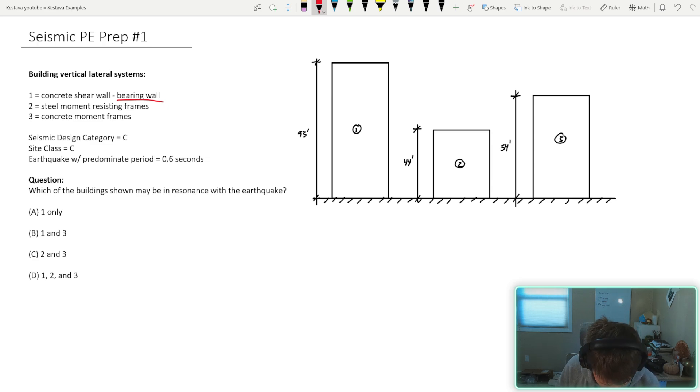Building type two is a steel moment resisting frame, and building type three is concrete moment frames. Some additional site criteria: we are seismic design category C, site class type C, and we have an earthquake today with a predominant period equal to 0.6 seconds. The question is: which of the buildings shown may be in resonance with the earthquake?